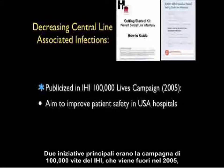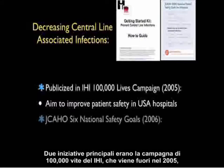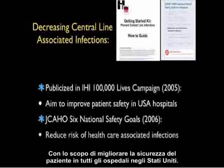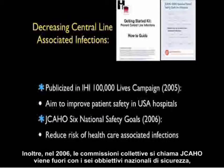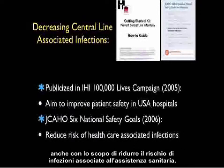Over recent years, there has been increasing momentum in initiatives to decrease central line-associated infections. Two major initiatives were the IHI 100,000 Lives campaign, which came out in 2005 with the aim to improve patient safety in all USA hospitals, and in 2006, the Joint Commission's JCAHO came out with six national safety goals, also with the aim of reducing risk of healthcare-associated infections.